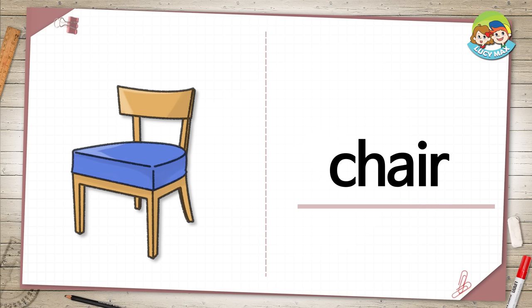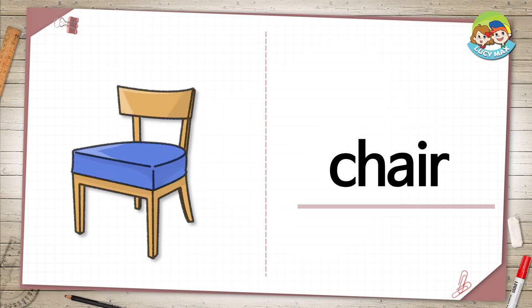Chair. This is something you can sit on. You sit on the blue part of the chair. You find them in different places. Is there a chair in your room?